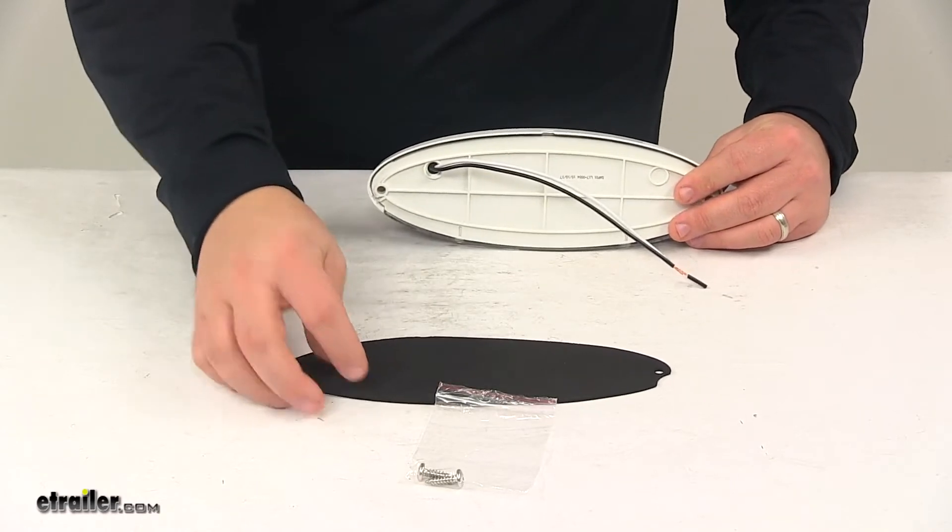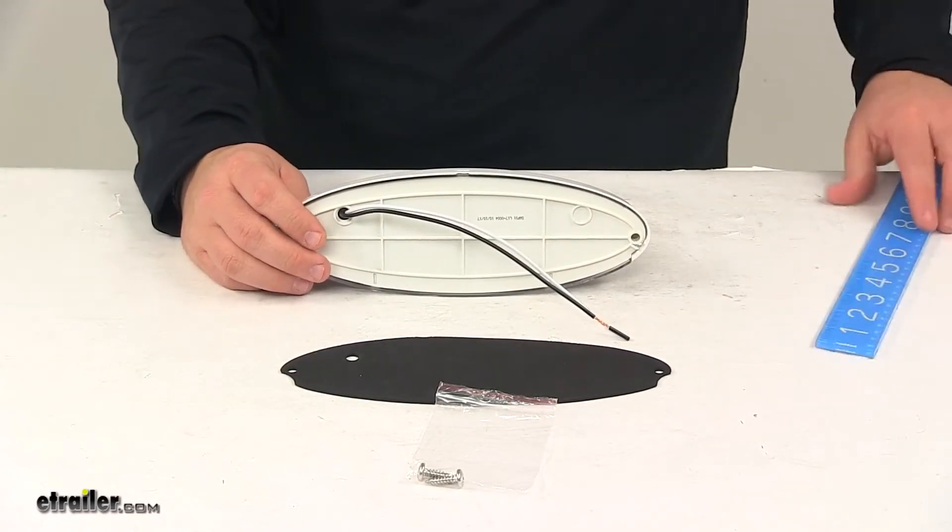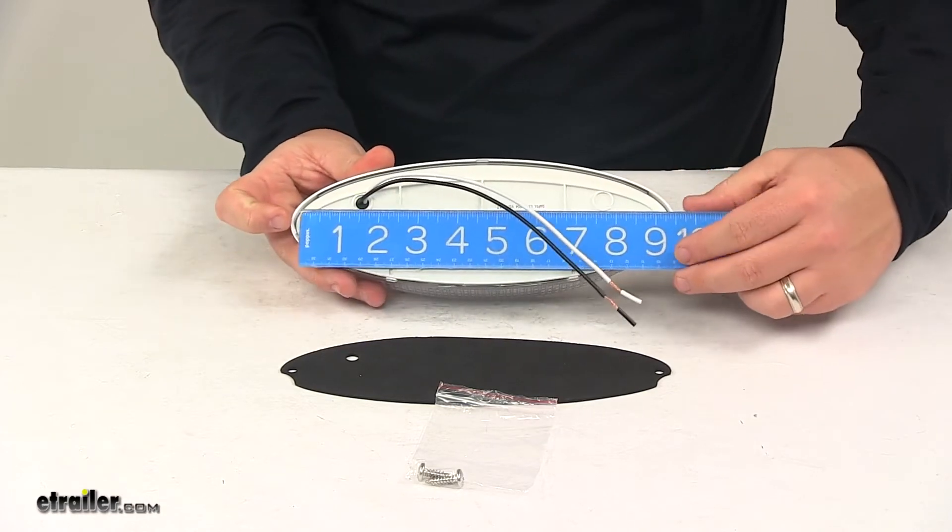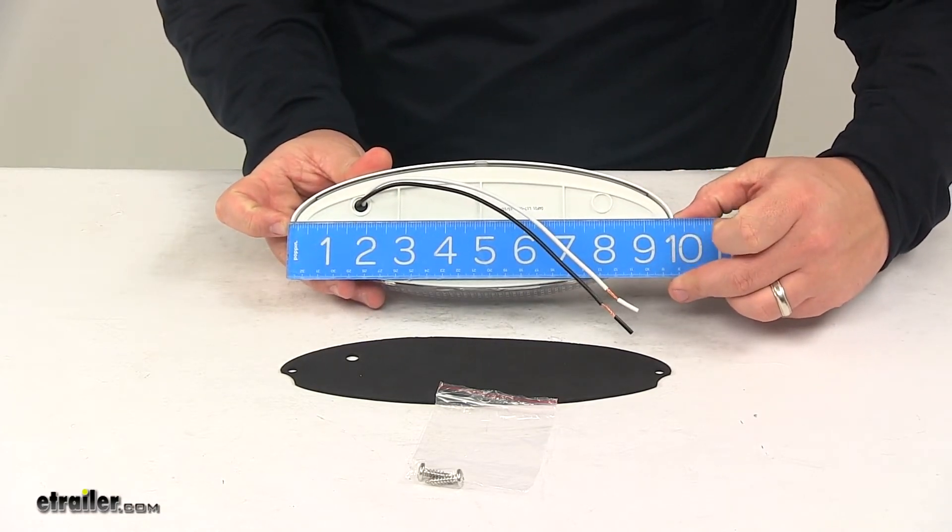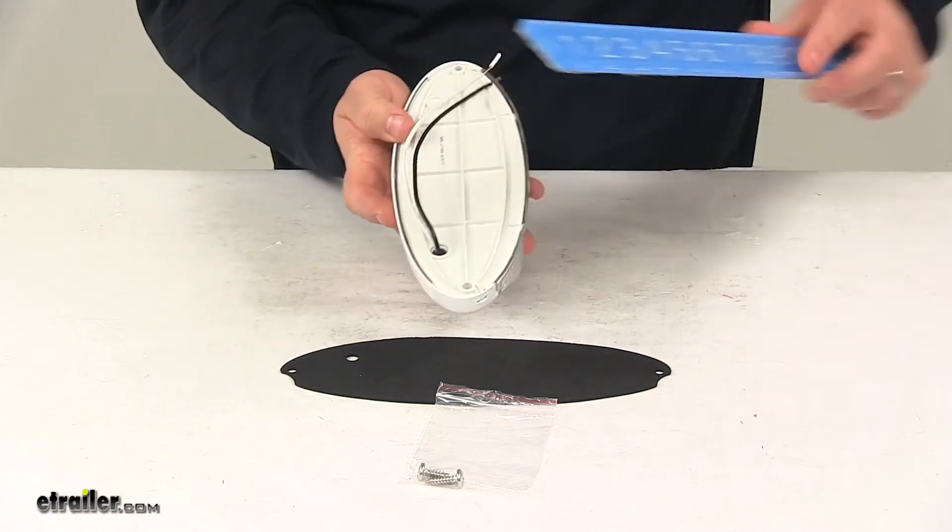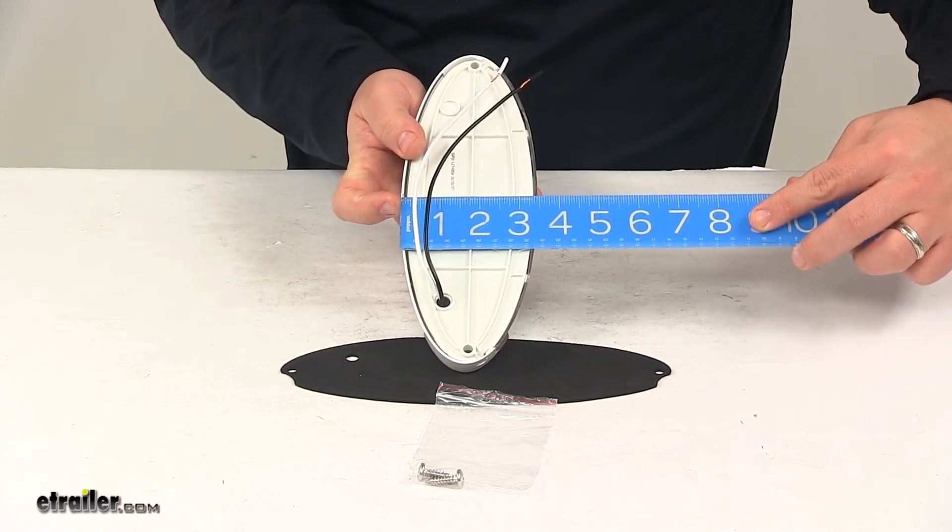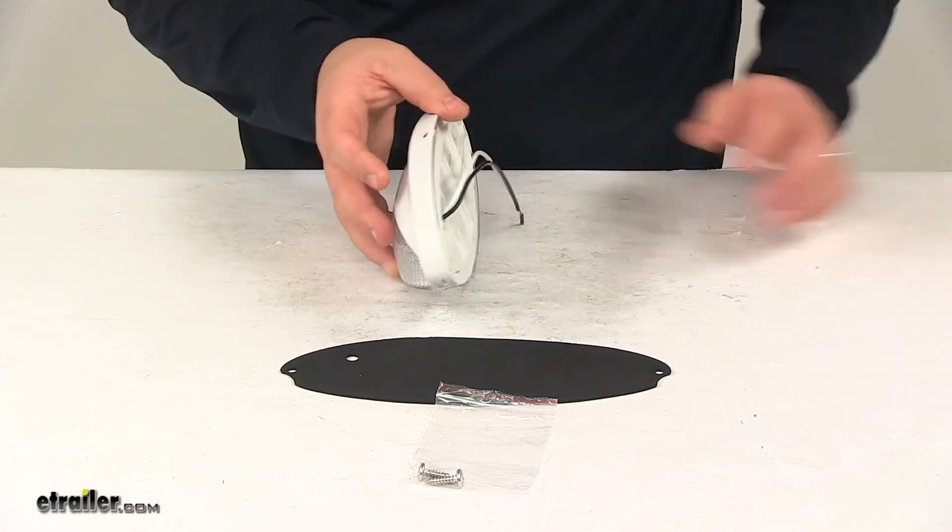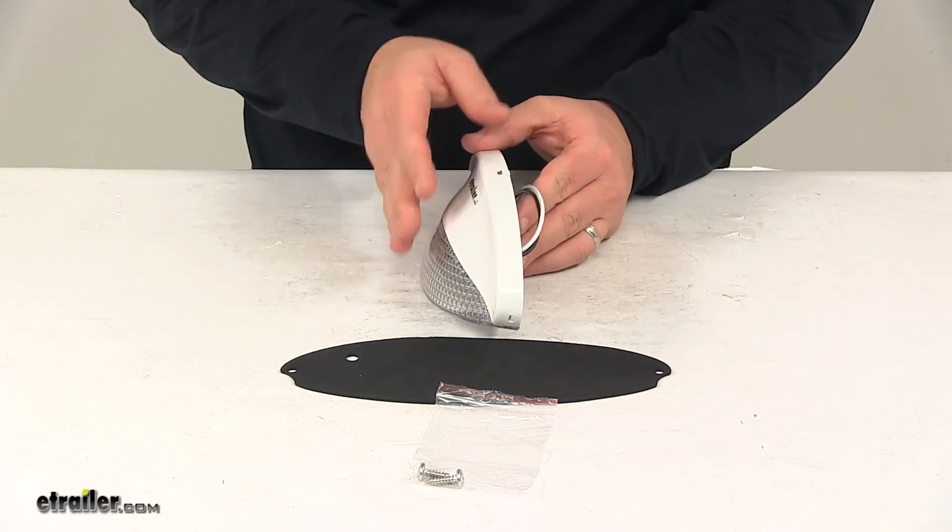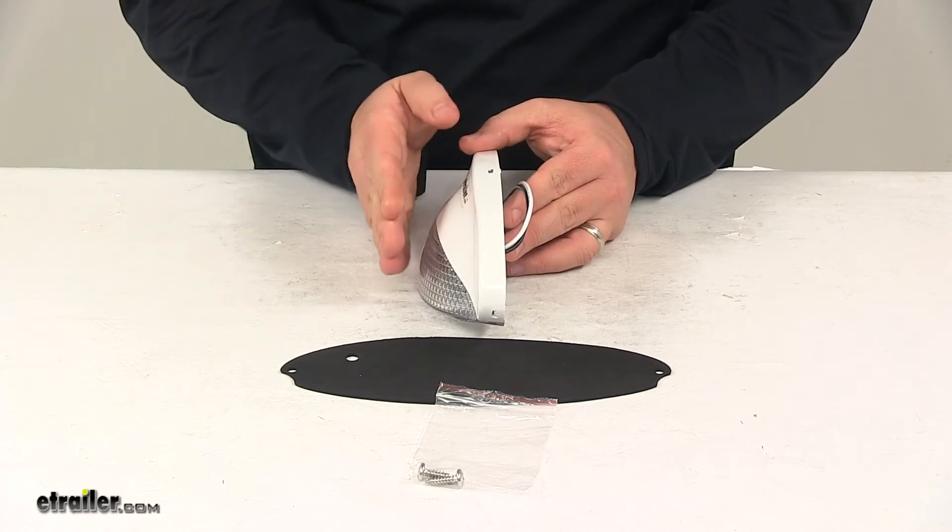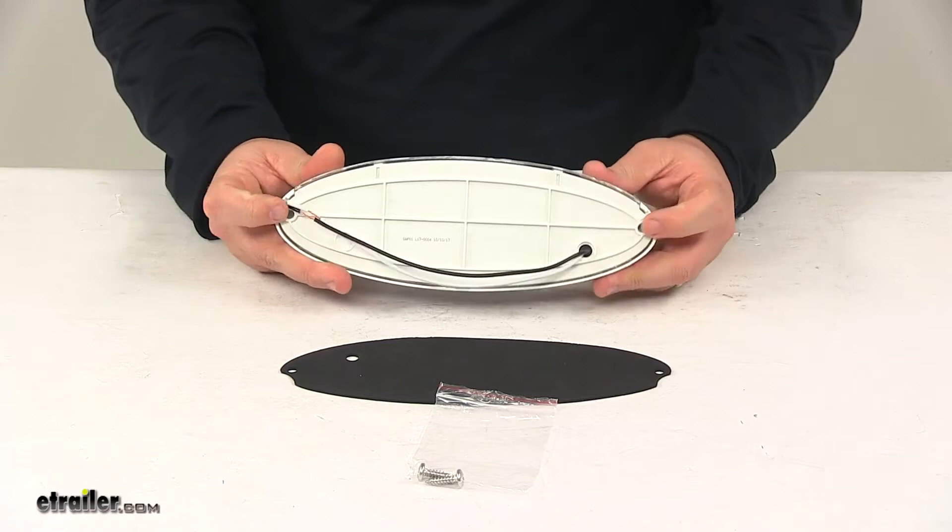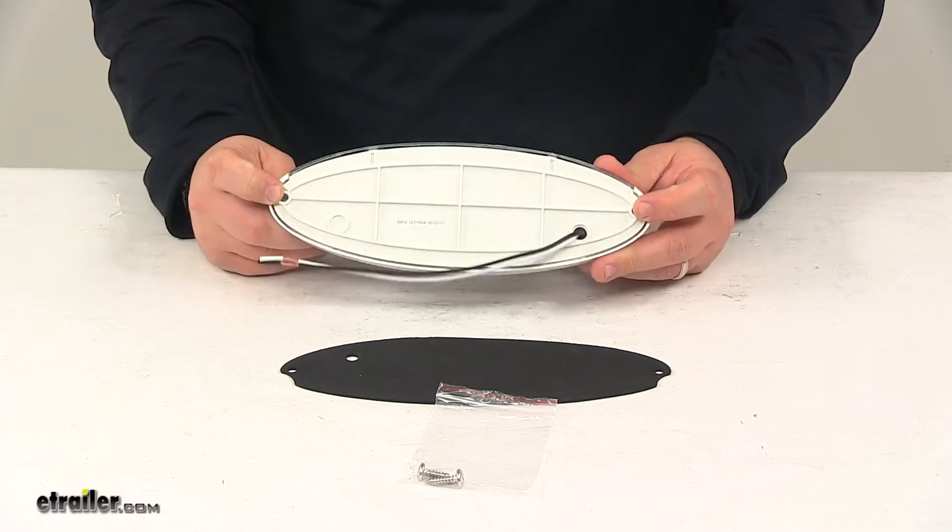A few measurements to go over real quick and then we'll hook it up to power. Edge to edge going in this direction, it measures about nine and three quarter inches. Top to bottom is about three and a half inches and the overall depth, that's from the mounting area to the furthest out point, I got a measurement of two and one quarter inches deep. The mount holes on the unit are separated on center by around nine inches.